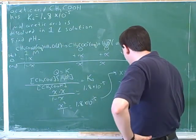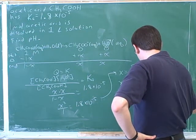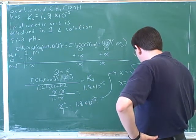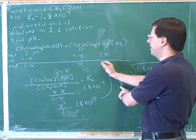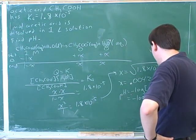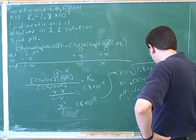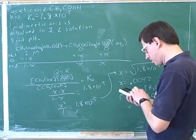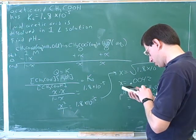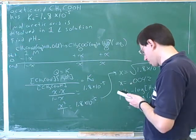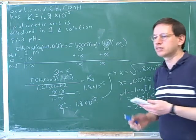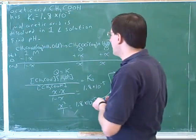Now to find the pH — that's the negative log of the hydronium concentration. x stands for the hydronium concentration, now that we've fixed the chemical equation. So that would be the negative log of 0.0042. What answer did you get for that? 2.37. Yeah, which matches our prediction.